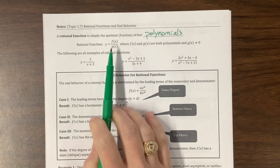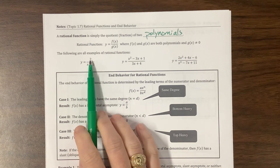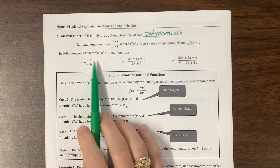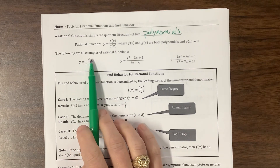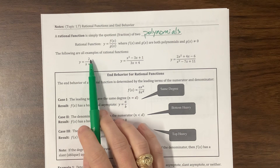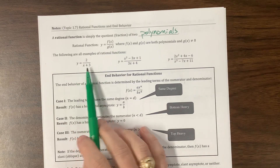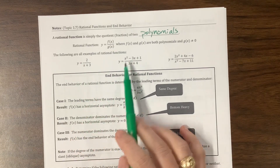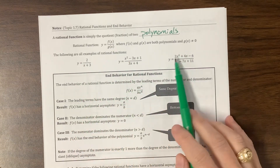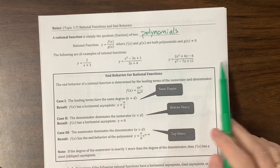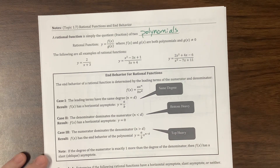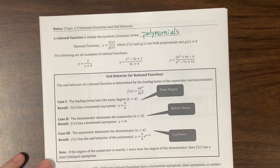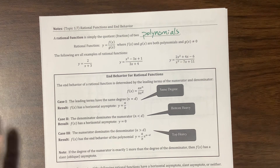So it could be something like 2 over x plus 3. That polynomial would be just a constant, and then that's linear. We could have a quadratic over a linear, or a quadratic over a cubic. Any of those would be rational functions. This is a review for you from Algebra 2.